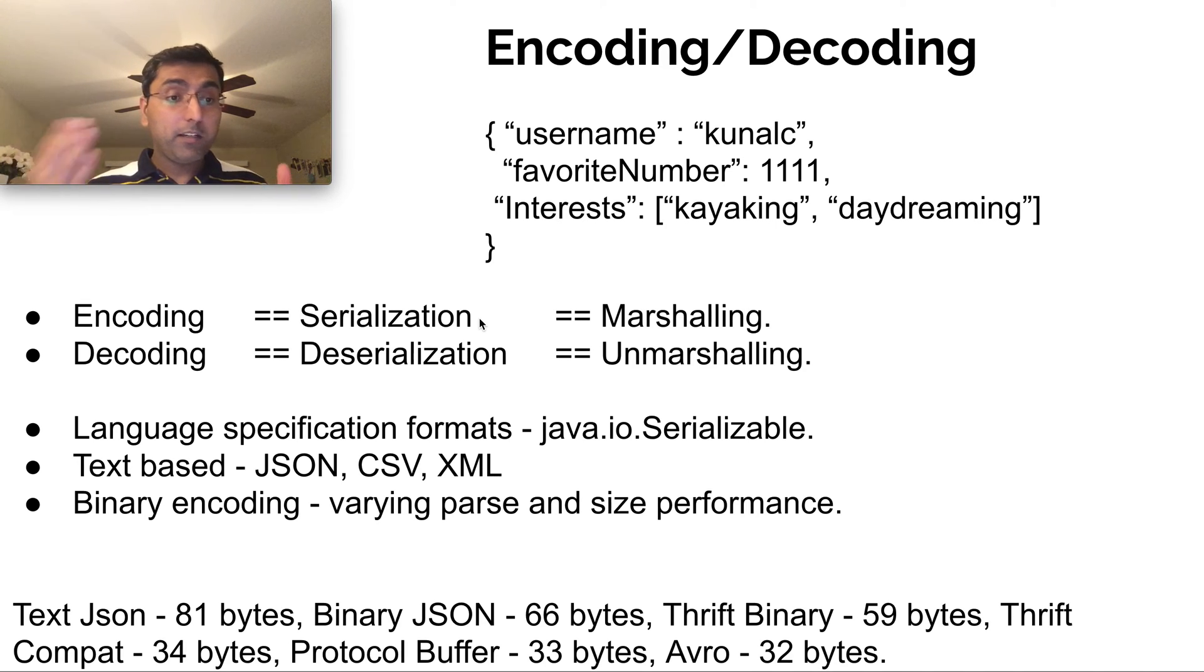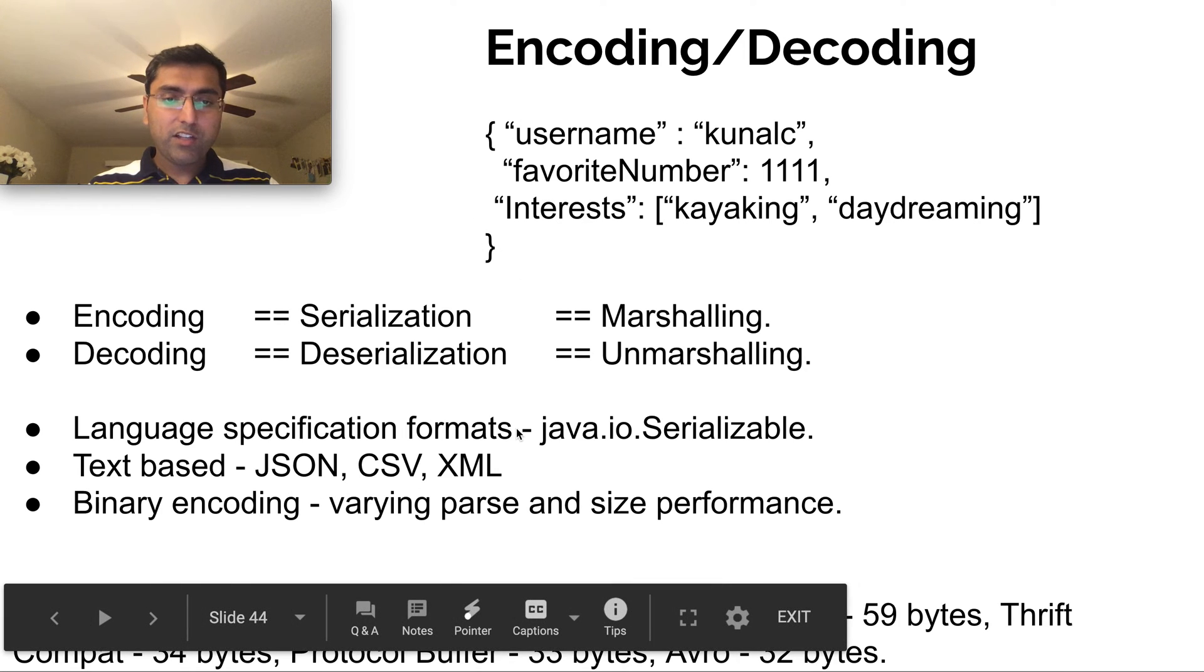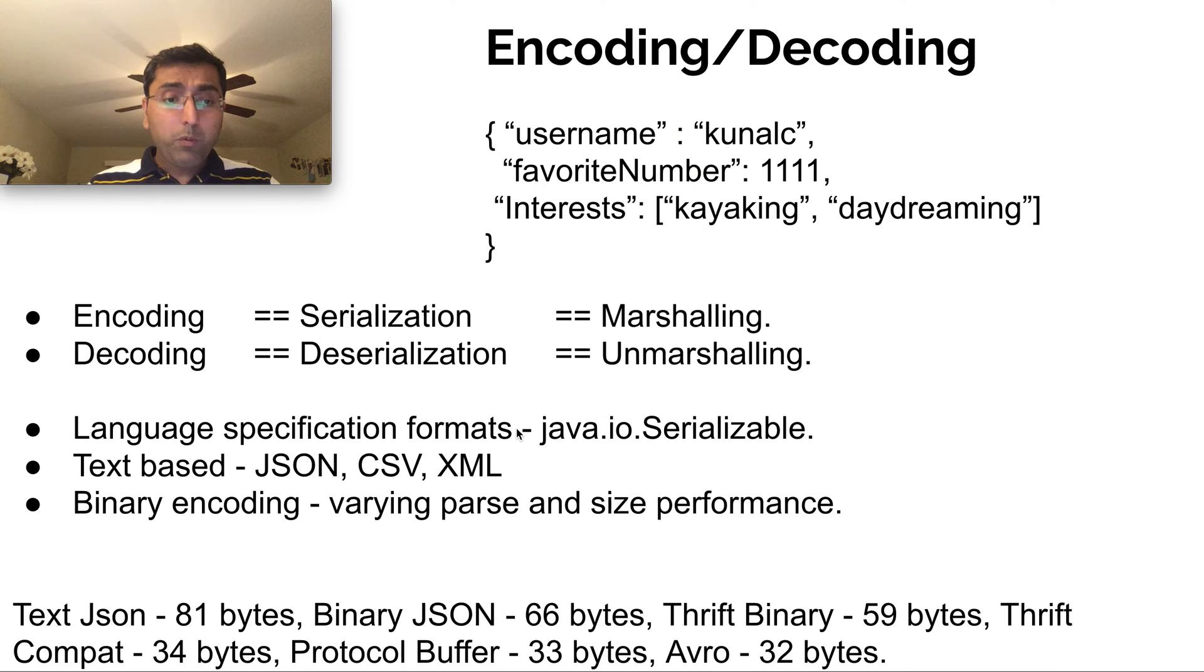Similarly, there are multiple binary encoding mechanisms which have various performances. And for this specific example, if I were to save this JSON object or this JSON text into text JSON, it'll take 81 bytes. But if I were to store it in binary form, I would store it in 66 bytes. I don't know how much benefit we have if we were to convert this into binary because readability is lost.